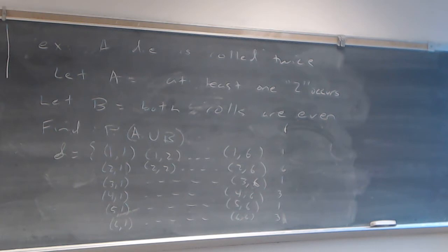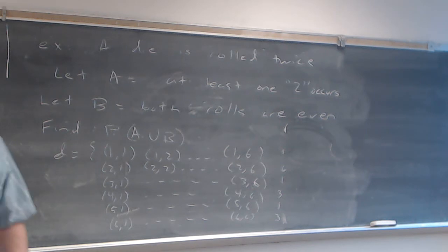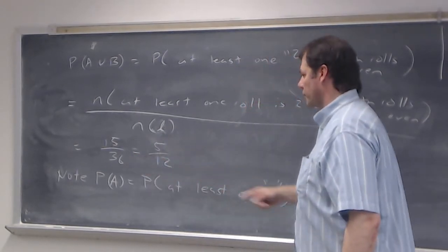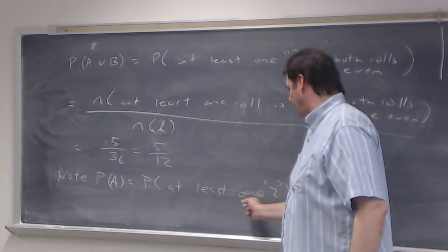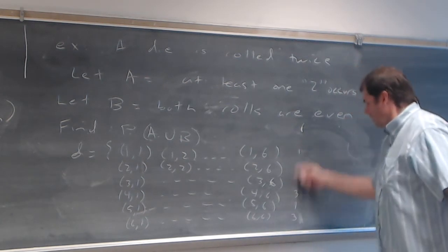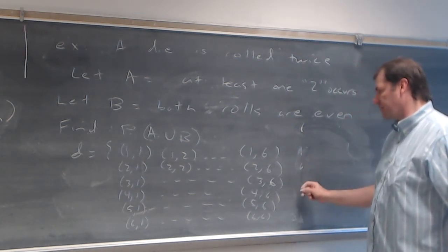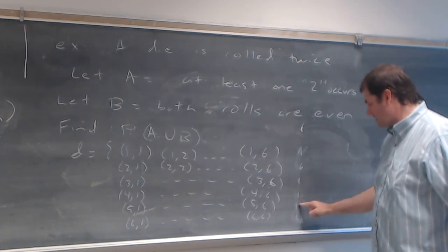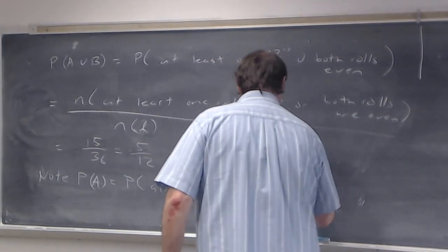That's one way of doing it, but it doesn't use the property. Now using the property: the probability of A — at least one two — we count those cases in the sample space. There's one in the first row, six in the second row, then one, one, one, and one in rows 3 through 6. That ends up being 6+1+1+1+1+1 = 11. So the probability of at least one two is 11 over 36.